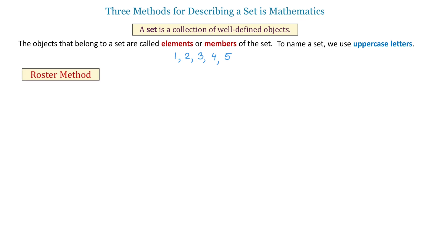The first method is the roster method. With the roster method, we use an uppercase letter to name a set. For example, we can use letter A, so we will write A equals. Then, we will list the numbers inside the braces, separating them by comma. So, inside the braces, we will write 1, 2, 3, 4, 5. Then, we will close the braces.